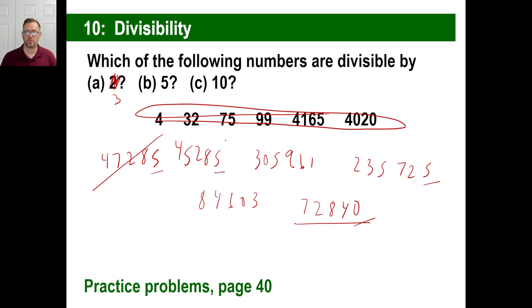4 plus 5 is 9. 11. 19 plus 5 is 24. That is divisible by 3, so yes, that is as well. 3 plus 0 plus 5 is 8. Plus 9 is 17. Plus 17 plus 6 is 23. Plus 1 is 24. That's also divisible by 3, so that is divisible by 3.